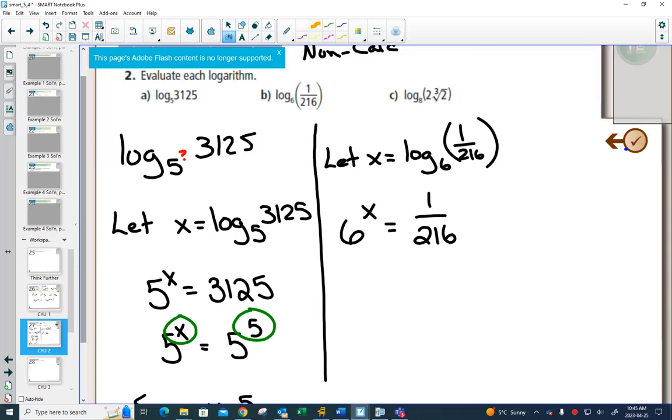Can you get these to be the same base? Can you use your powers chart? 216 is 6 to the 3. Having a 6 to the 3 on the bottom of your fraction, using your negative exponent rule,